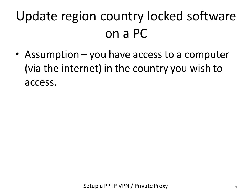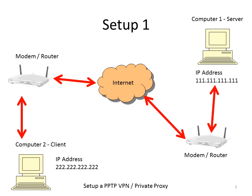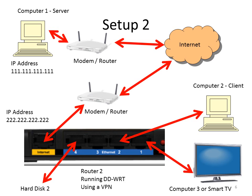This video is based on the assumption that you have access to a computer via the internet in the country. So if you wish to access US restricted content, you need to have access to a computer in the US, or a friend or a relative. Setup 1 is a diagram — we have computer 1 with an IP address of 11.11.11.11, and computer 2 which is the client with an internet address of 222.222.222.222. Setup 2 is more complicated but uses the same principle: a server connected via a DDWRT-installed router, and then a computer or smart TV connected to that router.